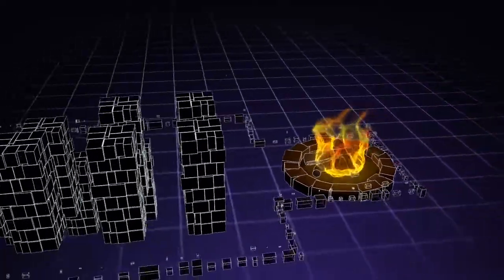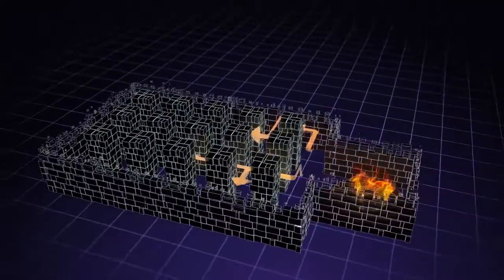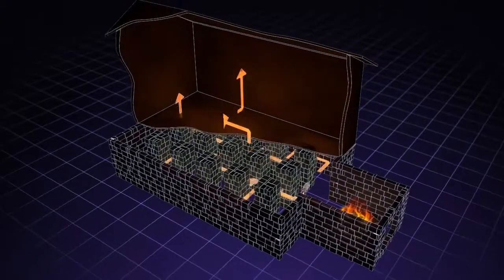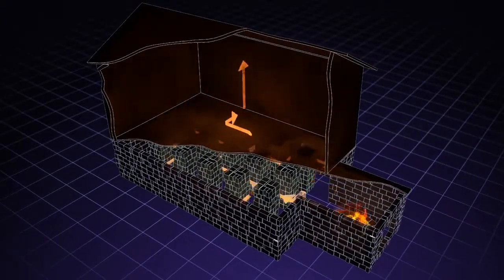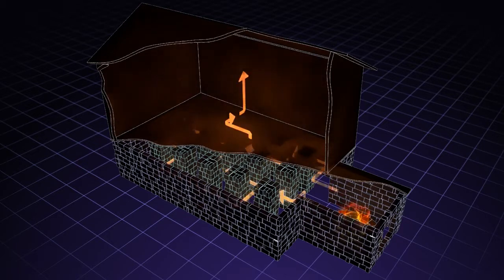The Romans created stone channels, or ducting, to move heat from a fire to other rooms. This passive method of moving heat didn't change very much until the introduction of electric fans and sheet metal during the Industrial Revolution.